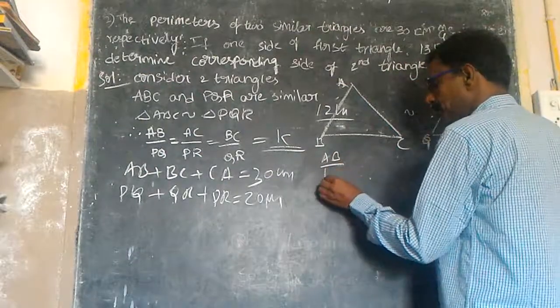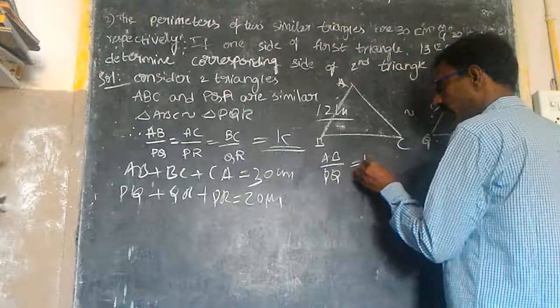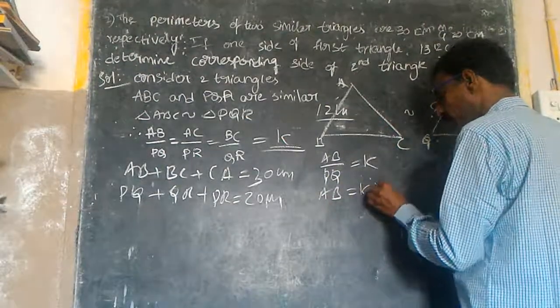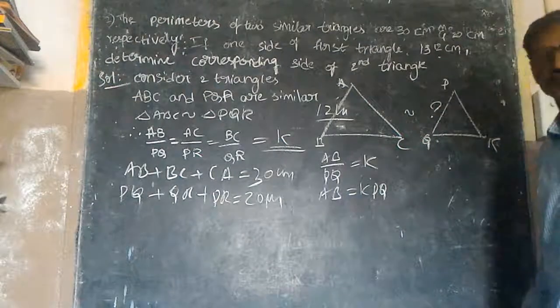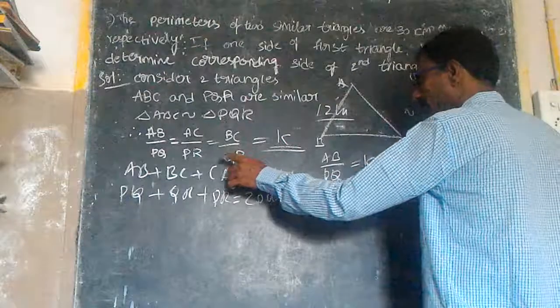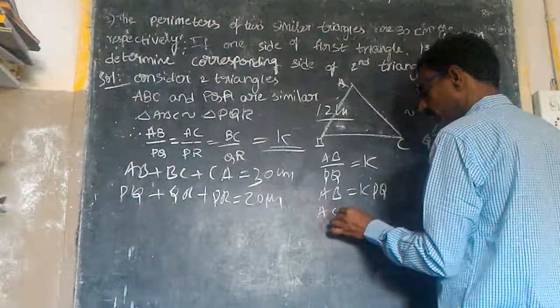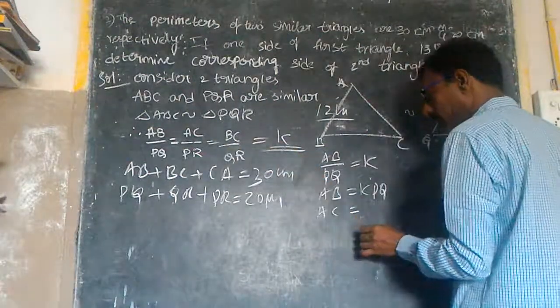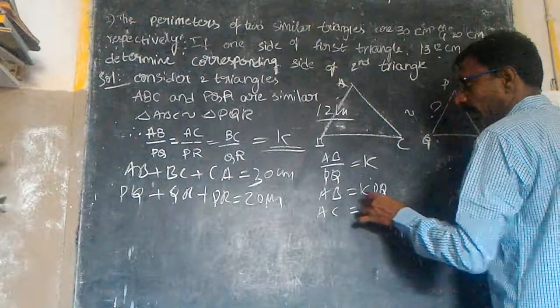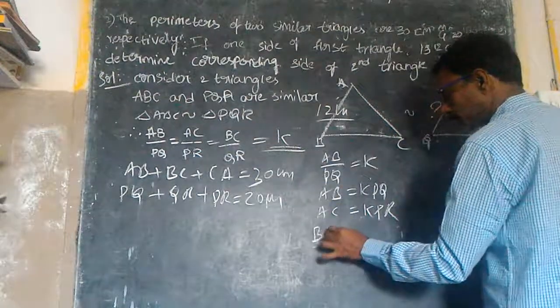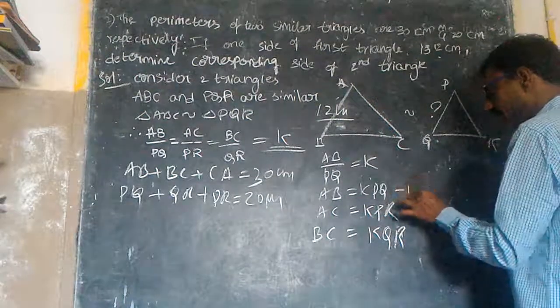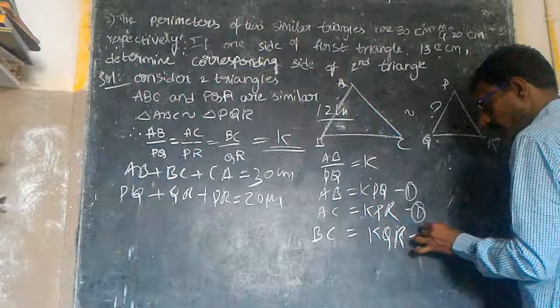AB by PQ is equal to K, so AB must be equal to K times PQ. Similarly, BC is equal to K into QR, and AC is equal to K into PR. Equation 1, equation 2, equation 3.